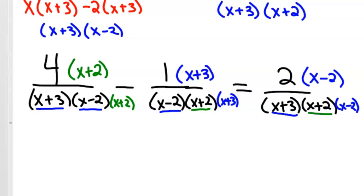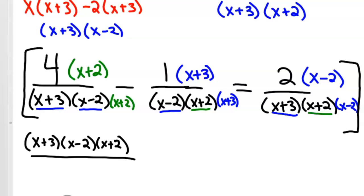We don't have it here, so we're going to have to multiply this by x plus 2 top and bottom. Well, the reason we get a common denominator is now we could multiply by the reciprocal across the entire equation and eliminate the denominator. So if I multiply this whole thing by the reciprocal of the denominator, which is x plus 3 times x minus 2 times x plus 2 over 1.